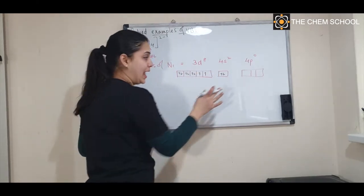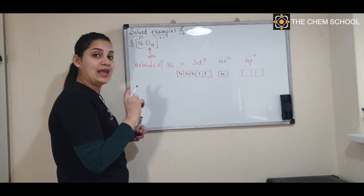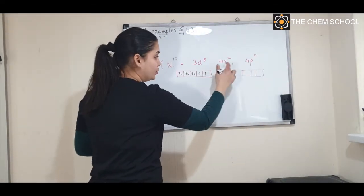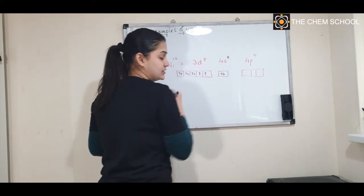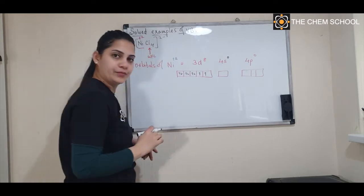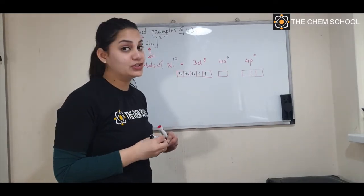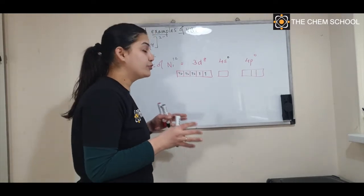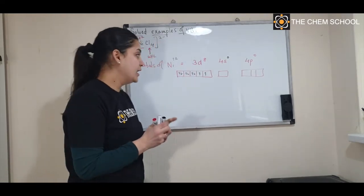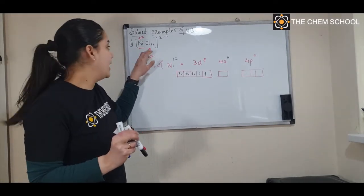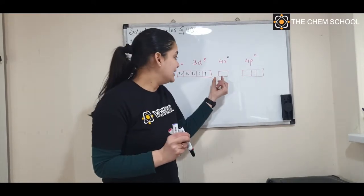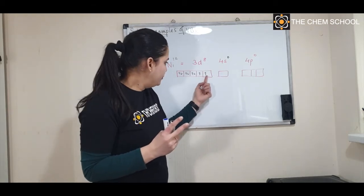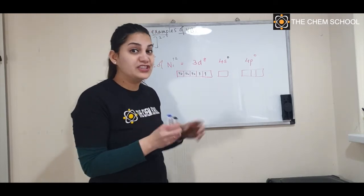For Ni²⁺, you remove electrons from the outer orbital, which is the s orbital. So it becomes 4s⁰. This is how the orbital of Ni²⁺ looks without hybridization. Now to carry out hybridization, you need to decide which orbitals to take. Chloride is a weak field ligand, and each ligand comes with a pair of electrons. Each orbital has a capacity of only 2 electrons, so a weak field ligand cannot cause spin pairing.